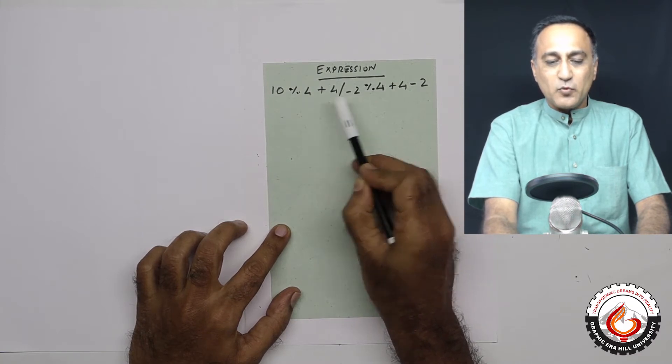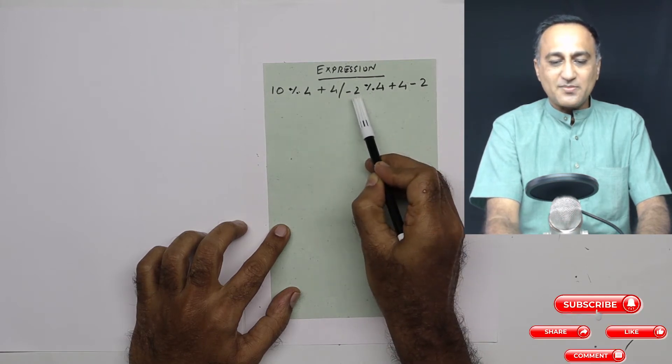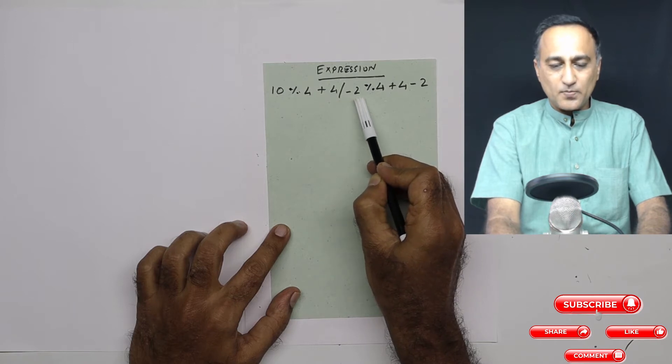This fellow is going to have more priority than any of the other operators. So in the very first step, what is going to happen is two is going to end up becoming minus 2. After that,